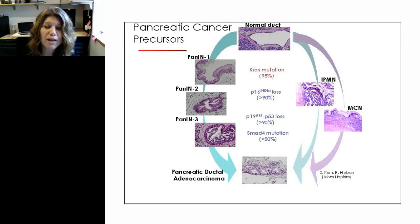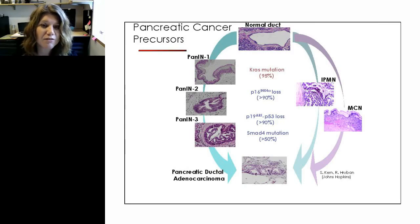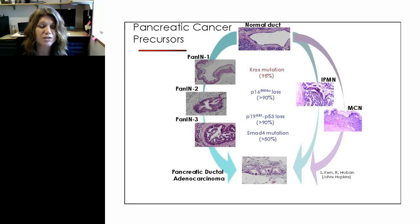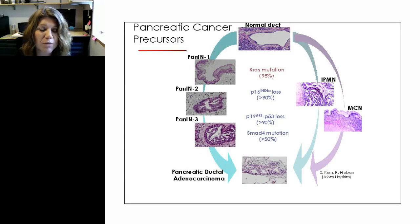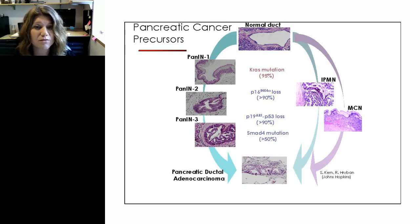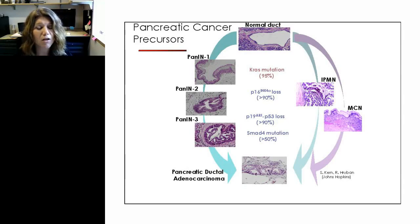Pancreatic cancer is deceptively homogeneous. The first mutation is KRAS, occurring in 95% of patients. However, KRAS is a terrible biomarker because it's upregulated in many benign conditions. In PANIN 1 and 2 lesions, the likelihood of progression to cancer in a person's lifetime is low. You get classic oncogene activation in KRAS, loss of tumor suppressors P16-INK4A, and by PANIN 3: loss of P19-ARF and P53 — all of which occur in 90% or greater of patients.